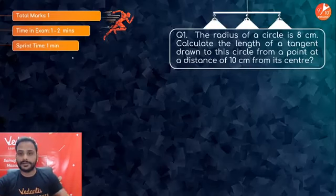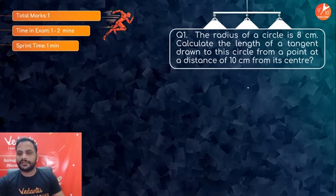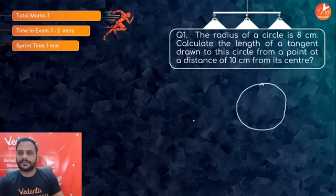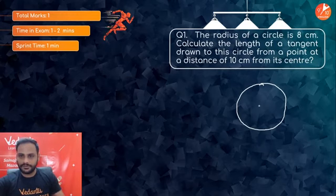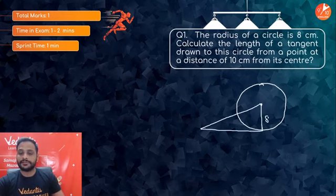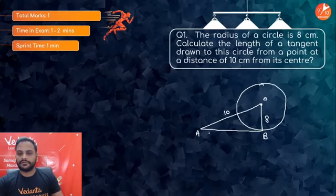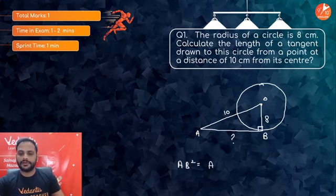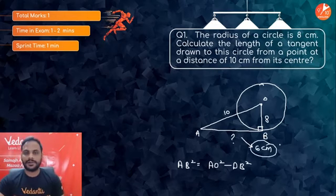First question: the radius of a circle is 8 cm. Calculate the length of a tangent drawn to this circle from a point at a distance of 10 cm from its center. The radius is 8 cm, the distance from center is 10 cm. Since the radius at the point of contact is perpendicular to the tangent, by Pythagoras: AB² = OA² - OB² = 100 - 64 = 36, so AB = 6 cm.